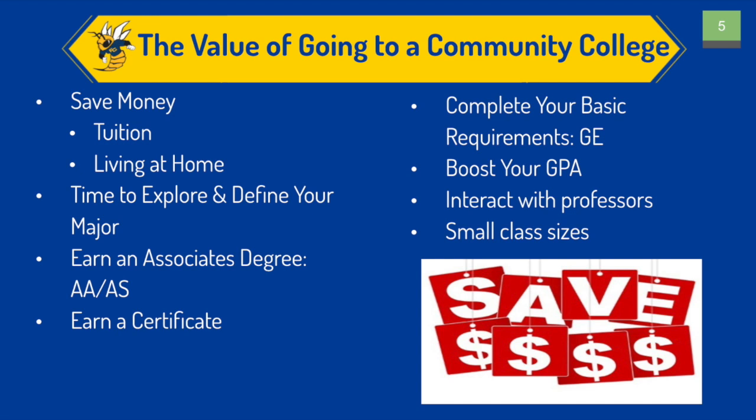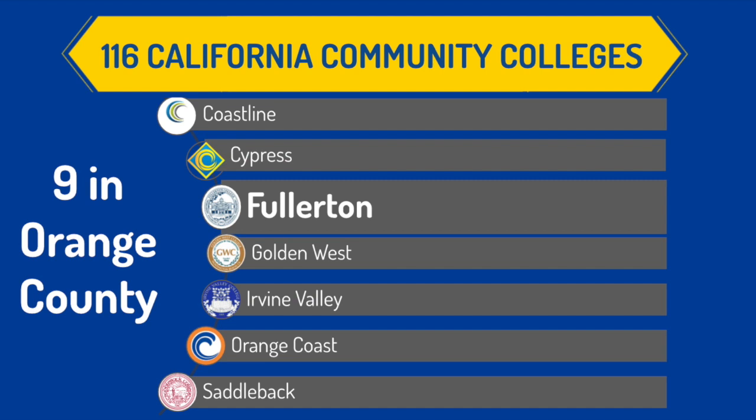There are nine community colleges in Orange County, which are Coastline, Cypress, Fullerton, Golden West, Irvine Valley, Orange Coast, and Saddleback. Each are unique in their own way and offer different areas of expertise. Some similarities of these campuses are that there are no fees to apply or to see an academic counselor, and there is an automatic acceptance when applying. The enrollment fee for California residents is $46 and they all offer student support services.